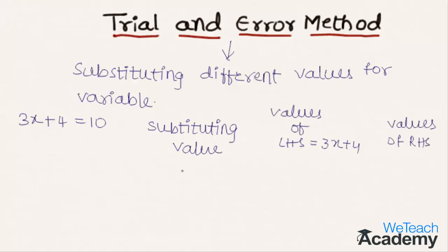By substituting x equal to 1 in the LHS we get 3 into 1 plus 4 equal to 7, and we have the constant term 10 as the RHS value.